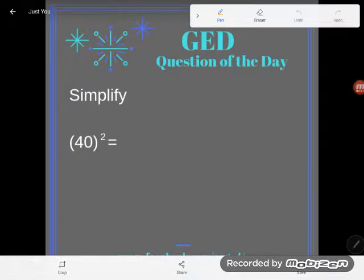So it says simplify, and what I'm simplifying here is 40 squared, or another way to read that, 40 to the second power.